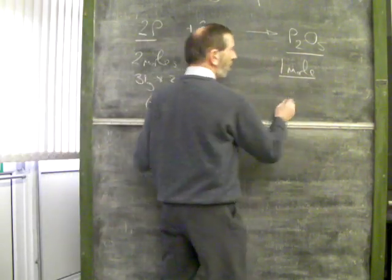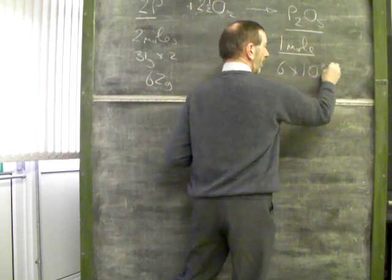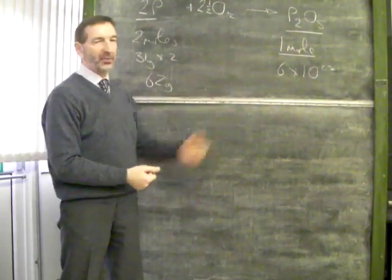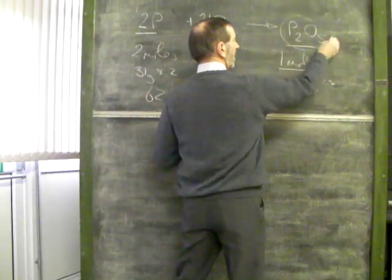Of course, number of molecules, 1 mole, we're talking about Avogadro's number. Because that's what 1 mole is. 1 mole of anything is Avogadro's number. In this case, Avogadro's number of molecules.